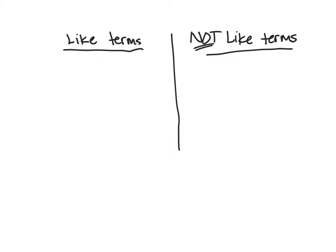I'll show you some things that are not like terms so your brain can wrap around this. Like terms might be 12 and 5 — both constants, not being multiplied by any unknown number. Something that is not a like term would be 3x and 50. 50 is a constant, it's just 50. 3x is not a constant — 3 is being multiplied by some unknown number. They're not like terms; I cannot just put them together.